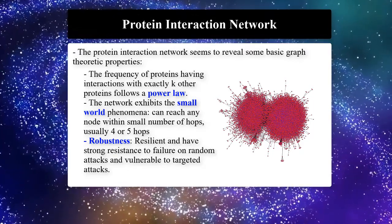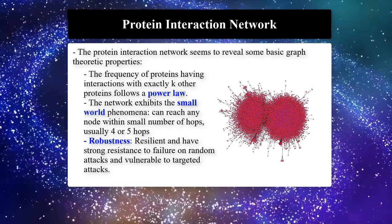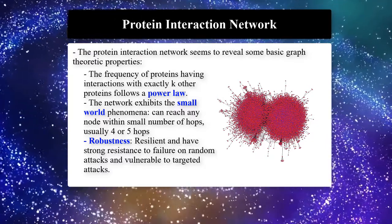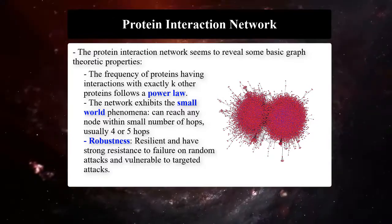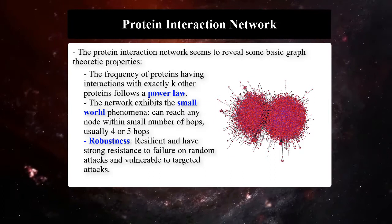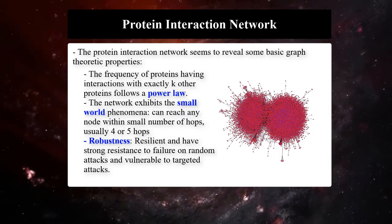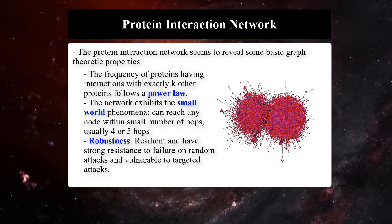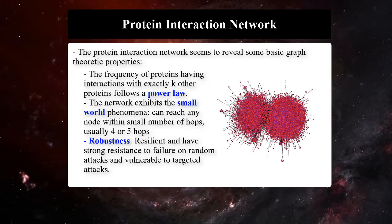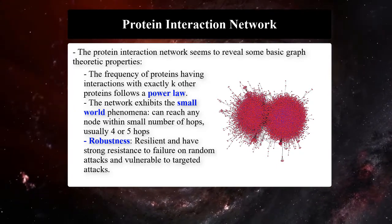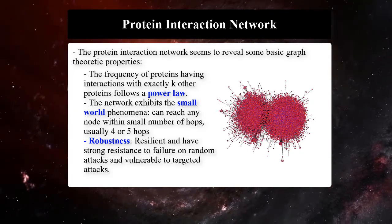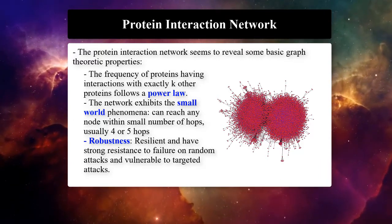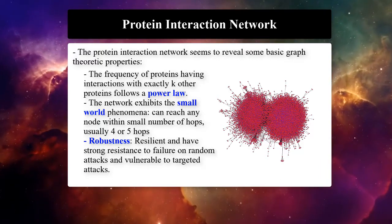The frequency of proteins having interactions with exactly k other proteins follows the power law. PPI networks exhibit the small-world phenomena. One can reach any node within a small number of hops, usually 4 or 5 hops. Although these networks are very sparse, it is very hard to study them without breaking them into smaller pieces.